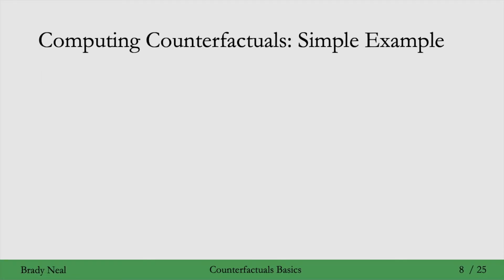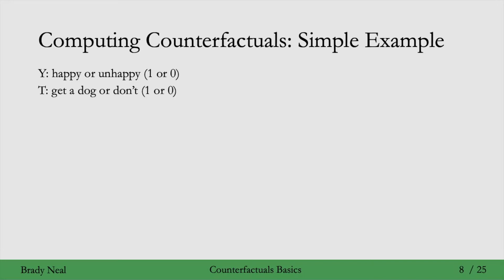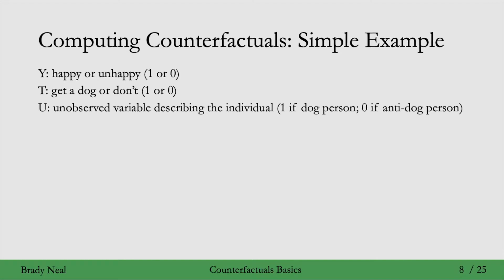We'll start with a very simple example. In this example, y corresponds to whether or not a person is happy: y equals 1 means happy, y equals 0 means unhappy. And the treatment of interest is getting a dog — t equals 1 means getting a dog, t equals 0 means not getting a dog. So we're interested in the causal effect of getting a dog on happiness.